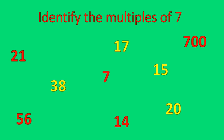Notice the other four numbers are not multiples of 7 — you can't multiply a whole number times 7 to get any of those numbers.